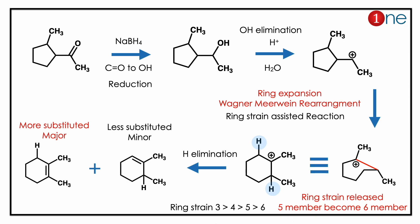In the first step, we are using sodium borohydride — it can reduce the carbonyl, so you get an alcohol. In the next step, we do acid hydrolysis, which removes the alcohol, so you have a carbocation.